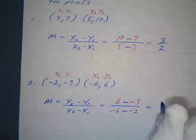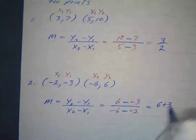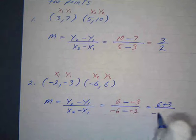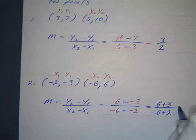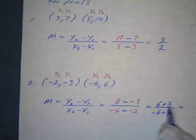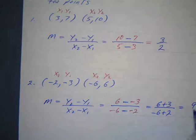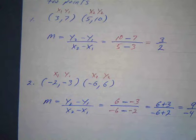So I've got 6 plus 3 all over negative 6. And what's a negative times a negative? A positive plus 2. What's 6 plus 3? 6 plus 3 is 9. What's negative 6 plus 2? Negative 4. So you have negative 9 over 4.